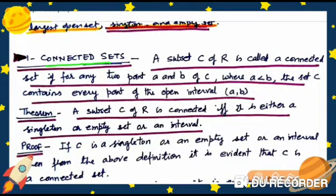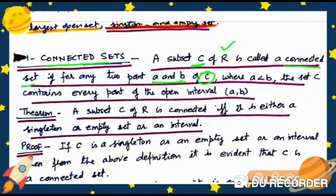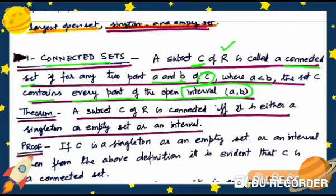Connected set: A subset C of R is called a connected set if for any two points a and b of C, where a is less than b, the set C contains every point of the open interval (a, b). That is, every point of (a, b) should be contained in C.